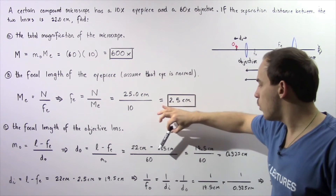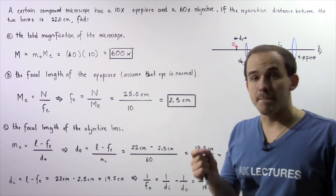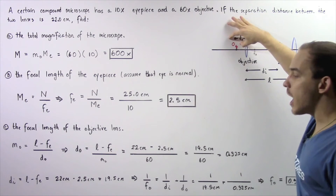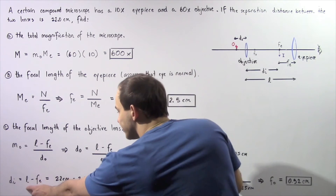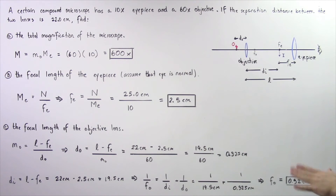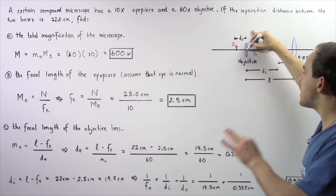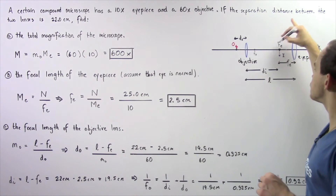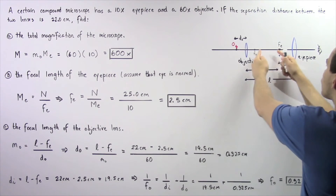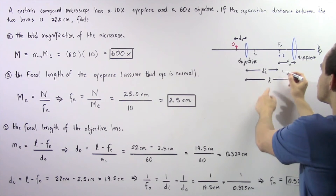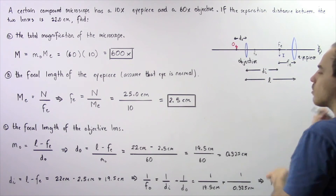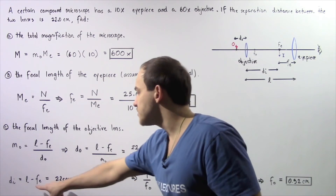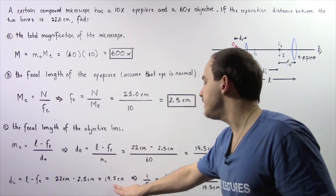So 22 minus 2.5 gives 19.5 centimeters, divided by 60 gives us approximately 0.325 centimeters — the distance from the objective lens to the object. Next, we calculate the image distance Di, which is the distance from the image to the objective lens. Since Di equals L minus Fe, we get 22 minus 2.5, giving an image distance of 19.5 centimeters.